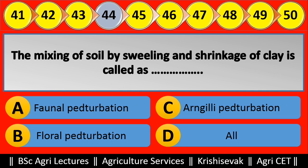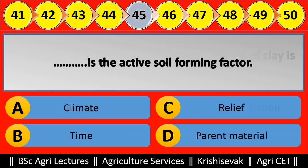Question 45: Blank is the active soil forming factor. Options are: (a) Climate, (b) Time, (c) Relief, (d) Parent material. Right answer is Climate, option A.